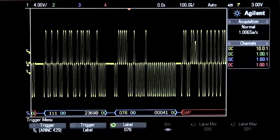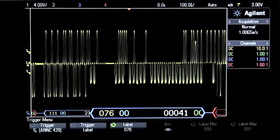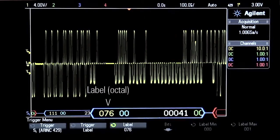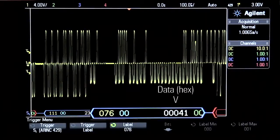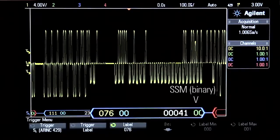Below the waveform, you can see the time-correlated decode trace showing the various fields within each word, including the label value in octal, the 2-bit SDI code in binary, followed by the data field in hex, and finally the 2-bit SSM code, also in binary.